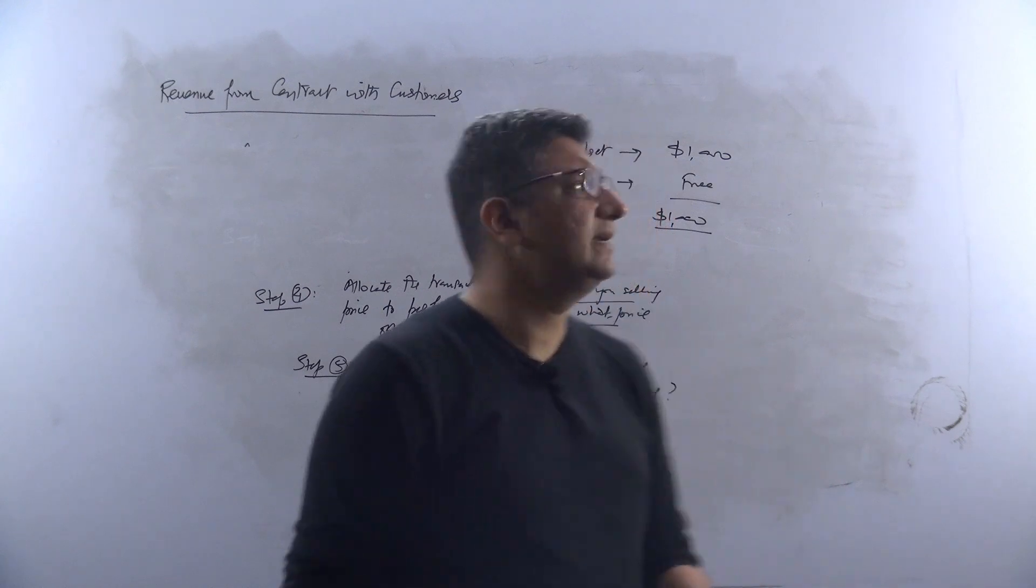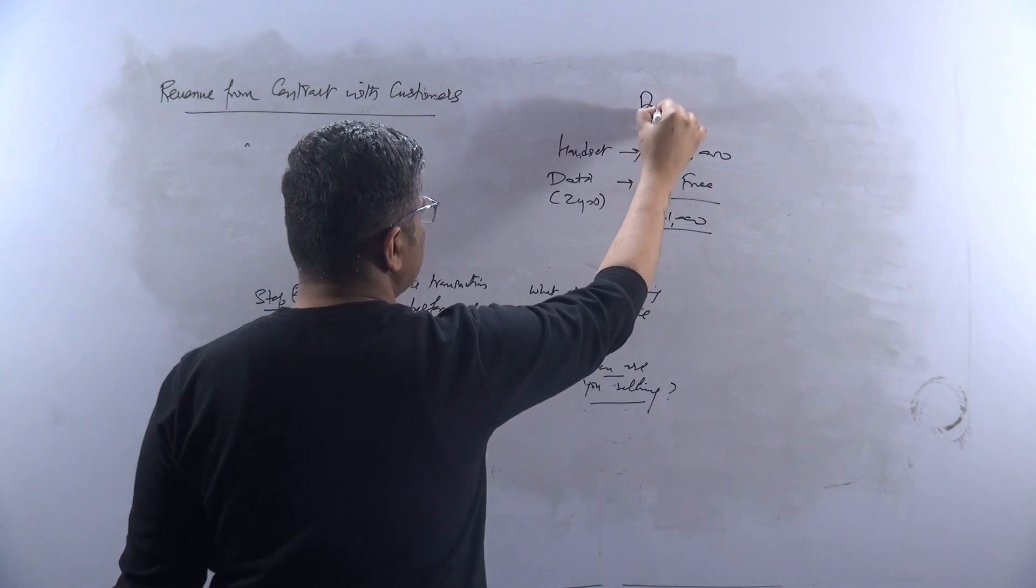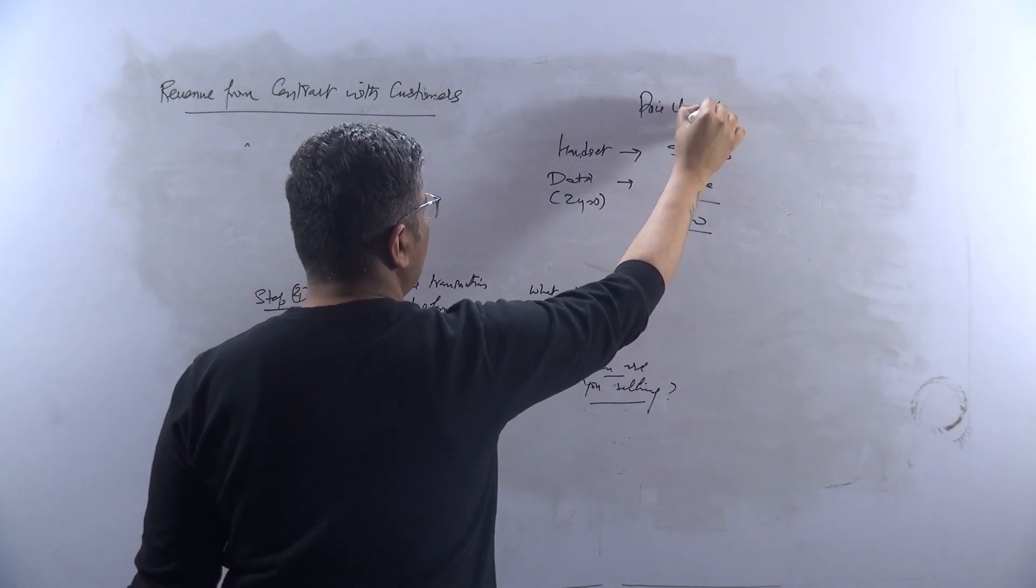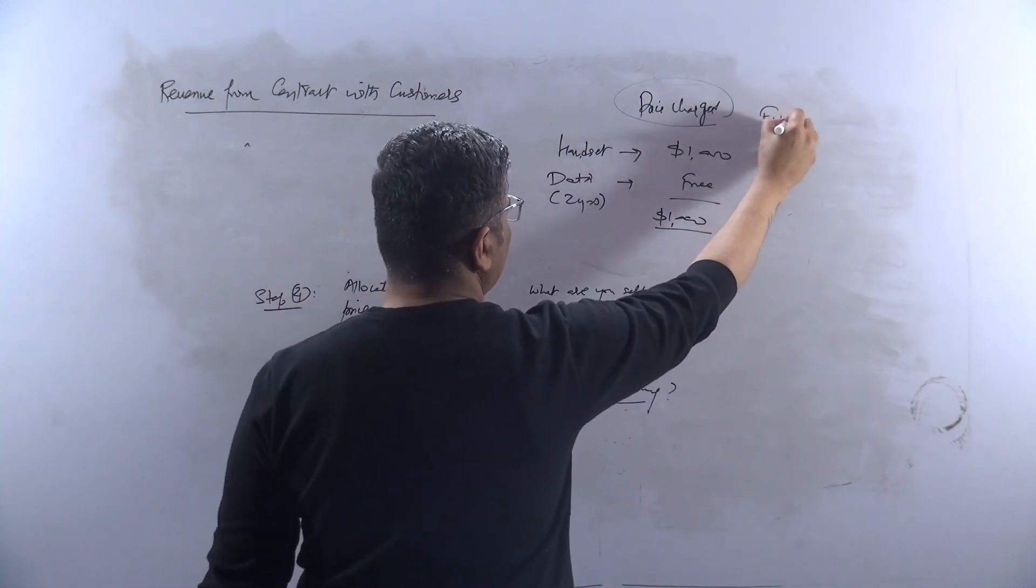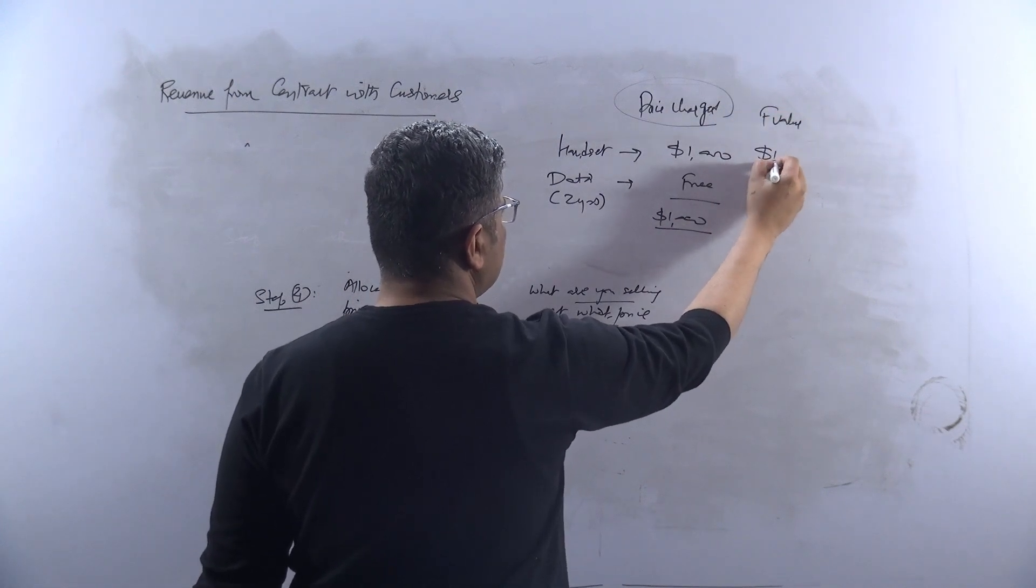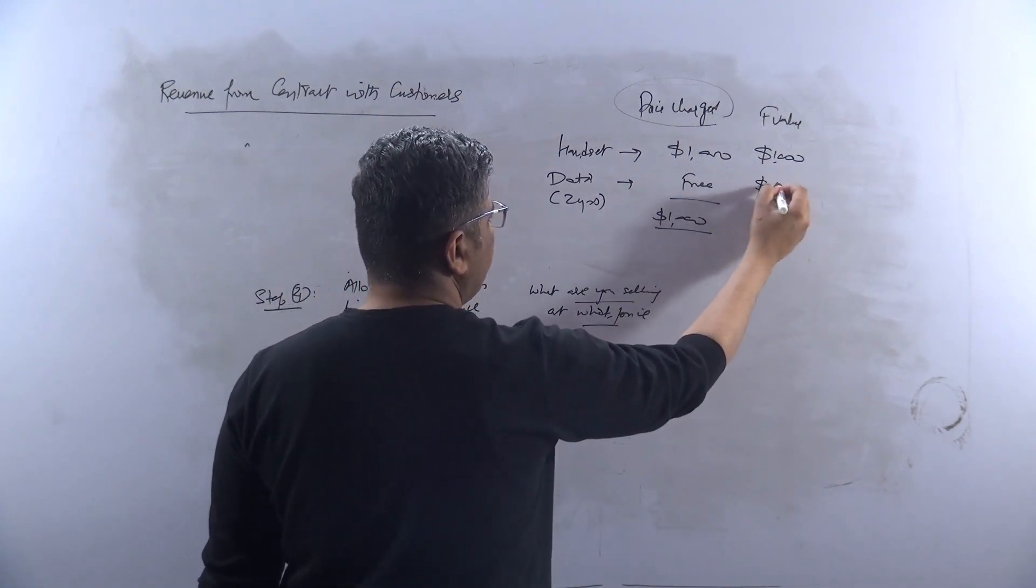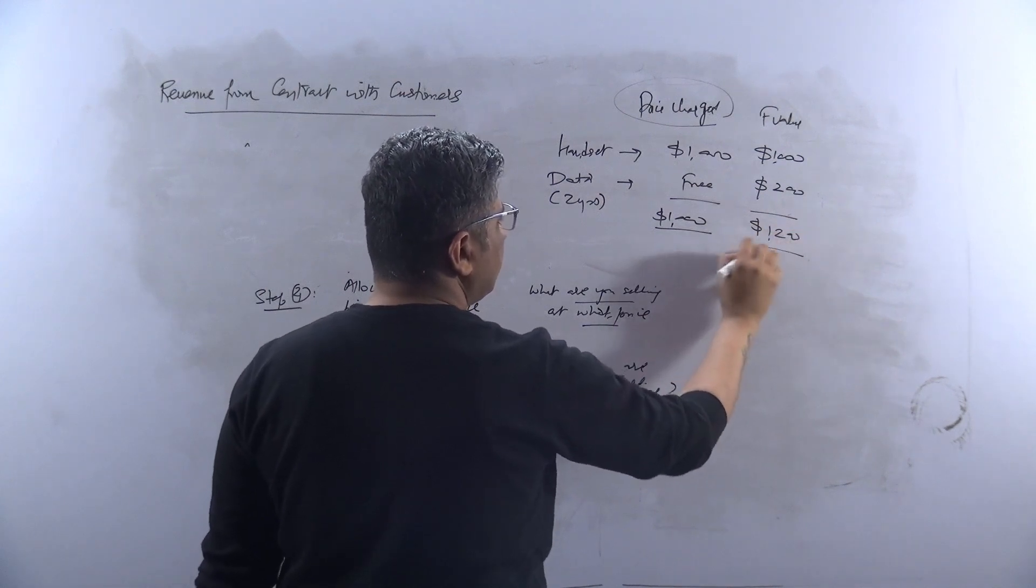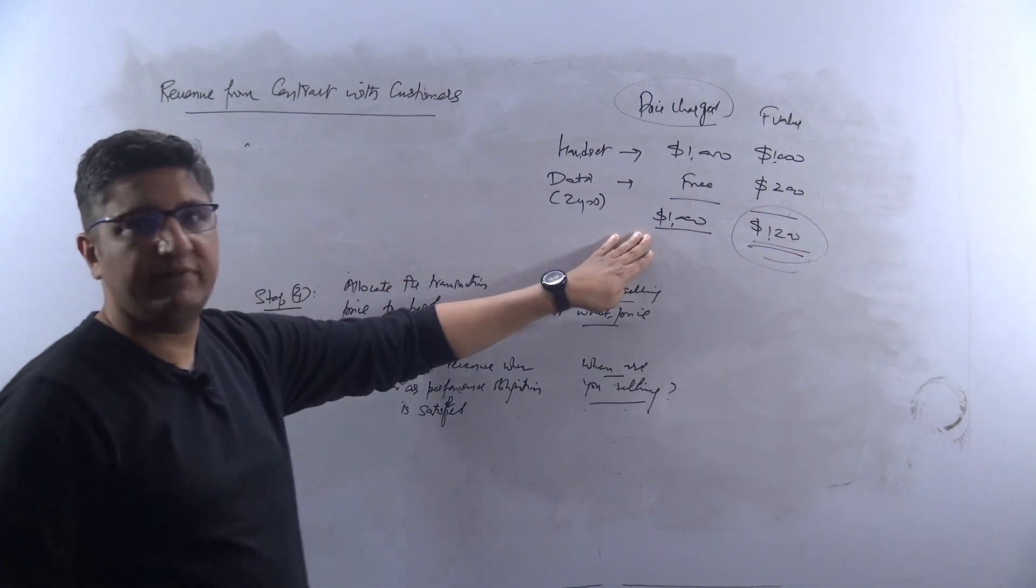But essentially, from the seller's perspective, so this is the price charged or the consideration. And then we are saying that the fair value of this handset, for example, is still $1,000, and this data would have probably come for $200, which means that something worth $1,200 is sold to you at $1,000.